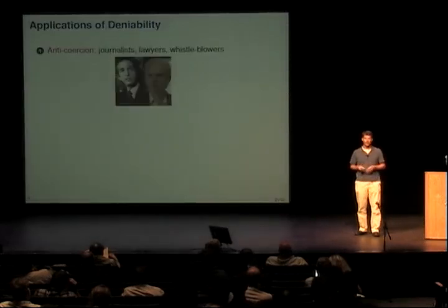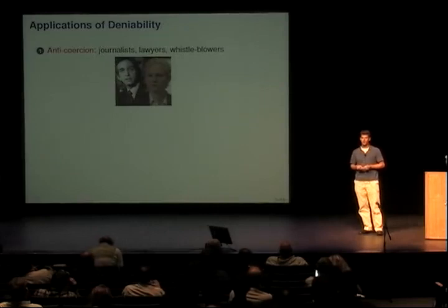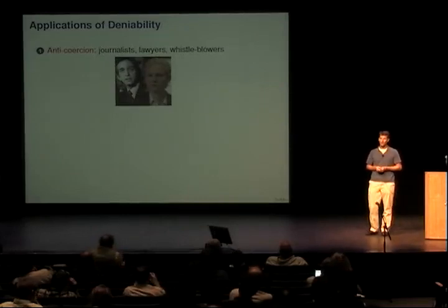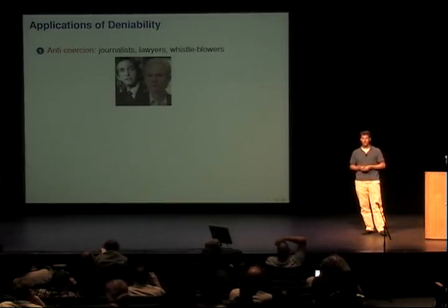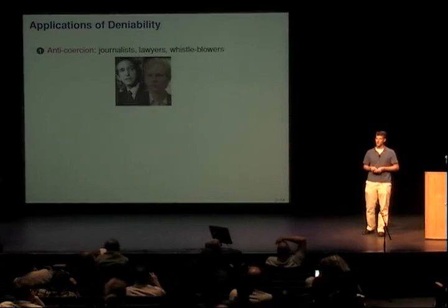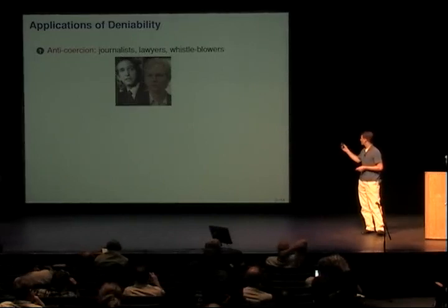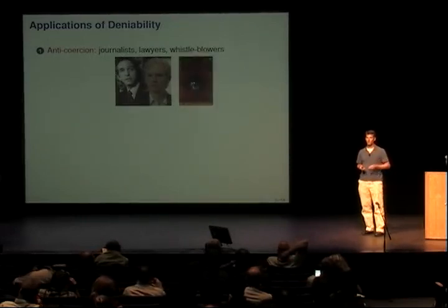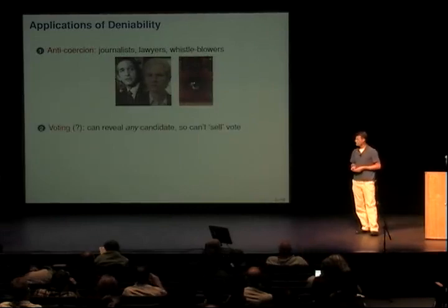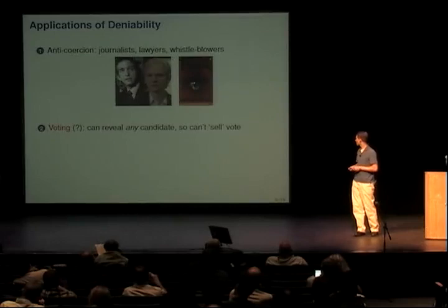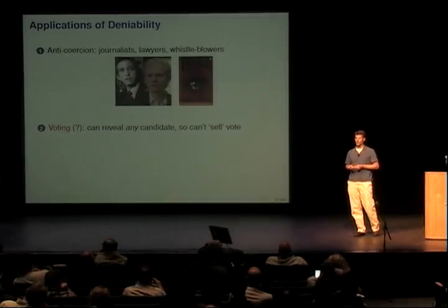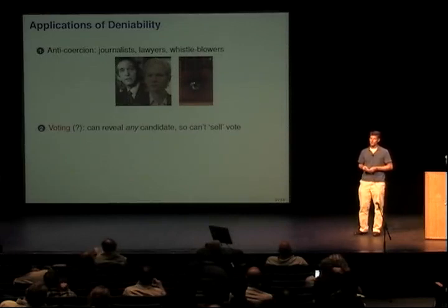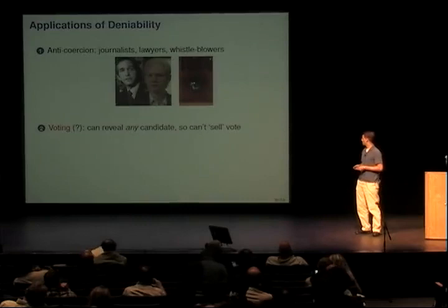This is a toy example, but there are many serious scenarios where deniability might be needed — any kind of anti-coercion scenario. Roger Dingledine's talk gave countless excellent examples where people might really need deniability for their own safety or security. For example, journalists or whistleblowers who want to keep their sources safe would definitely benefit from deniability. Deniability has often been proposed for voting protocols: if you encrypt your vote, but later your boss asks you to show how you voted, you could reveal any vote, so there's no way to force you to reveal your real vote or sell it.